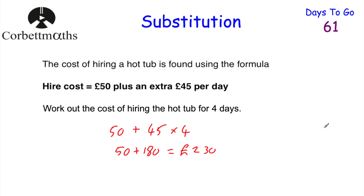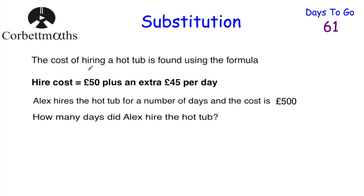And if you got that, well done. Now for the next part, using the same formula — hire cost equals £50 plus £45 per day — Alex hires the hot tub and the total cost is £500. How many days did Alex hire the hot tub for? Feel free to press pause and work that out.